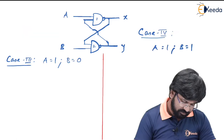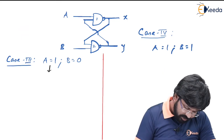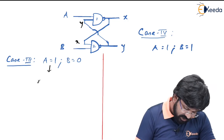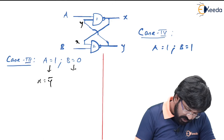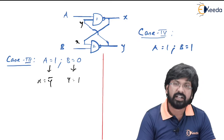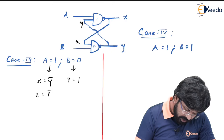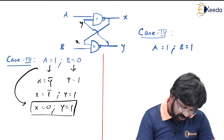Let us move to case 3: A equals 1, B equals 0. A equals 1 causes NAND gate number 1 to act as a NOT gate for the other input, which is Y. So X equals Y-bar. B equals 0 disables NAND gate number 2, so Y equals 1 by default. Substituting, X equals 1-bar equals 0. Therefore, when A equals 1 and B equals 0, X is always 0 and Y is always 1.